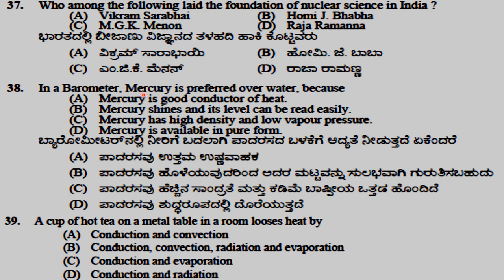In a barometer, mercury is preferred over water because mercury has high density and low vapor pressure. A cup of hot tea on a metal table in a room loses heat by conduction, convection, radiation, and evaporation.